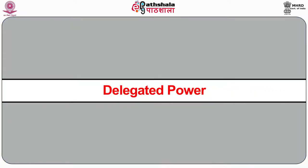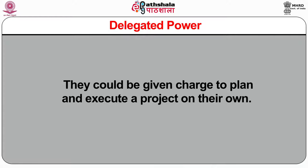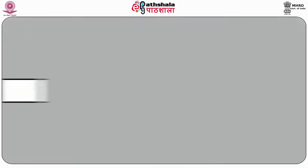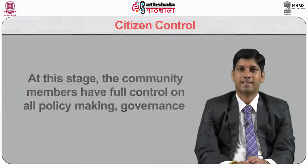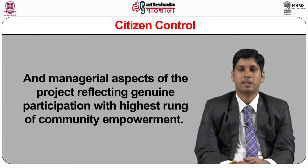The next one is delegated power. At this level, the situation could arise wherein the citizens could achieve dominant decision-making authority over a specific plan or program. They could be given charge to plan and execute a project on their own. Then there is citizen control. At this stage, the community members have full control on all policy-making, governance and managerial aspects of the project, reflecting genuine participation with the highest rung of community empowerment.